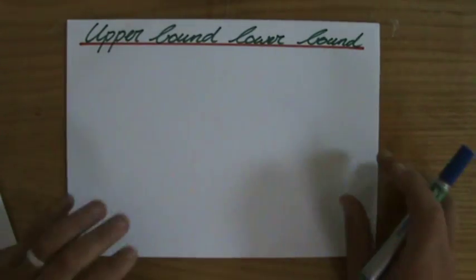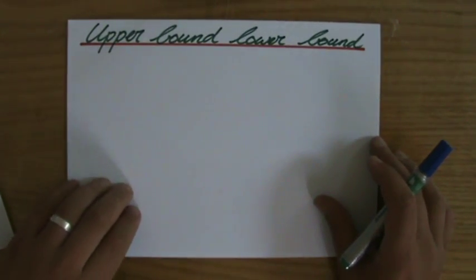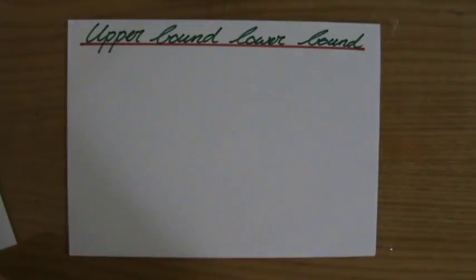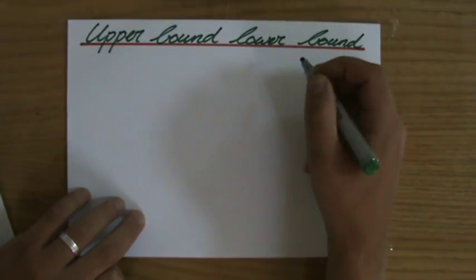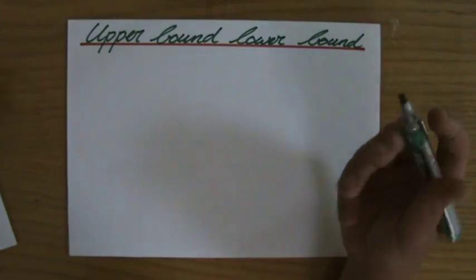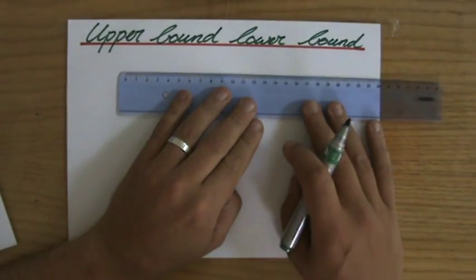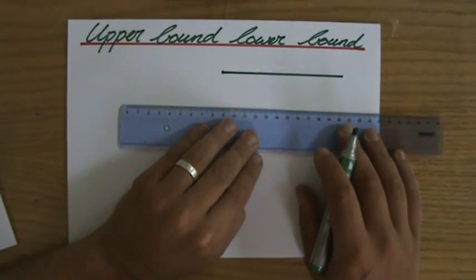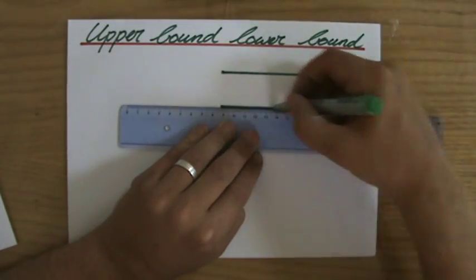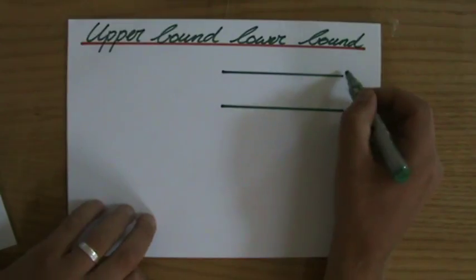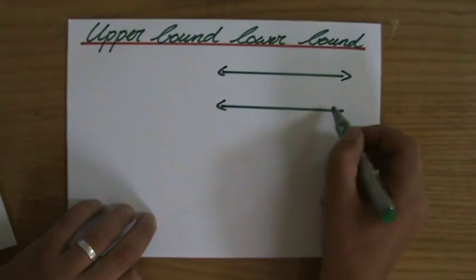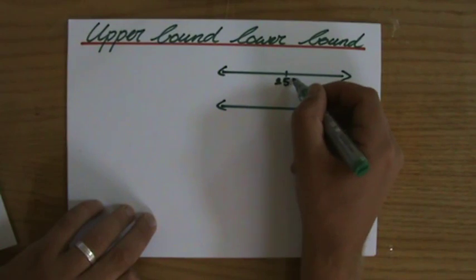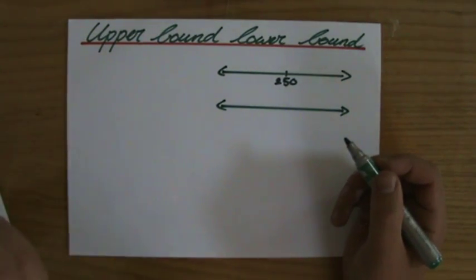So we're combining some understanding of rounding as well in this question. Let me write a few things down. We had 250 participants, and I'll draw a part of a number line here, and another number line for the amount of kilometers. So, 250 participants corrected to the nearest 10.